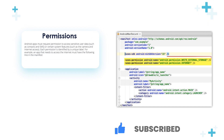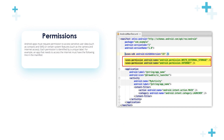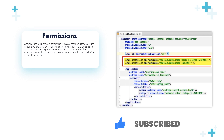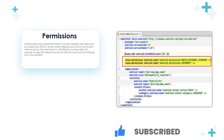Permissions — Android apps must request permission to access sensitive user data, such as contacts and SMS, or certain system features such as camera and internet access. Each permission is defined by a unique label. For example, if an app needs to access the internet, it must have the following line in the manifest: uses-permission android:name="android.permission.INTERNET". In this case, we define that this application needs internet access, so we add the permission. Other permissions the app may request include reading storage, writing storage, and accessing SMS content.